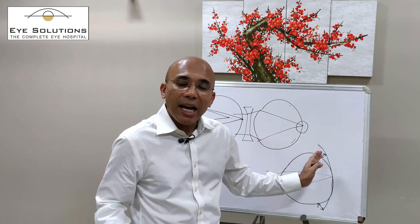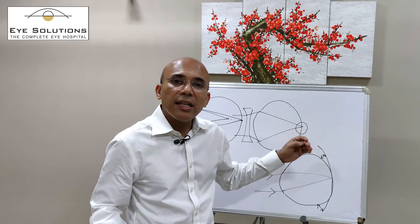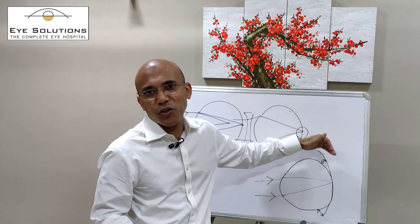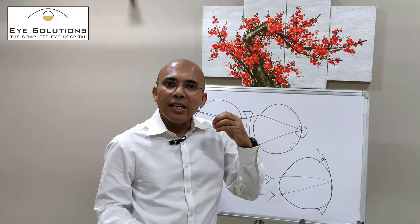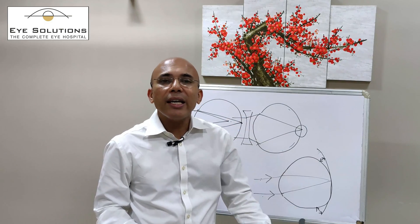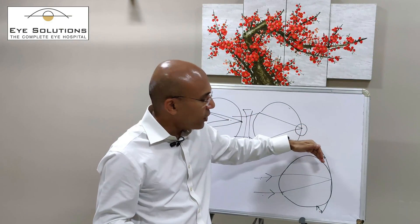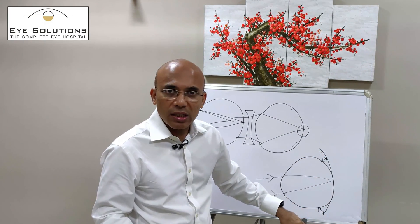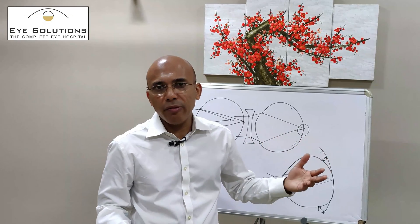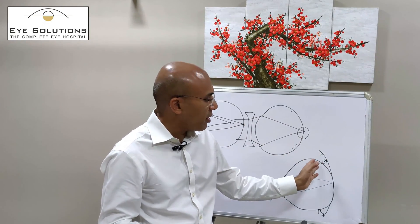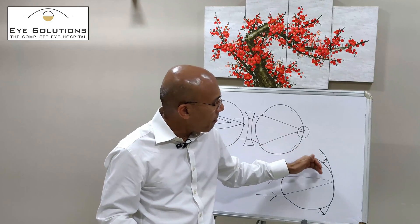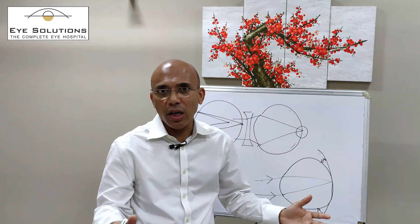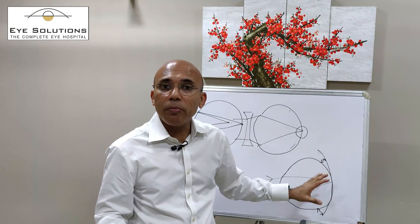When peripheral rays meet behind the retina, the signal the eye sends to the brain is that the eye is shorter than it should be — that the eye needs to grow longer. This is called a hyperopic defocus, which occurs when rays of light meet behind the retina. This hyperopic defocus acts as a stimulus for the eye to grow longer, causing myopia progression.